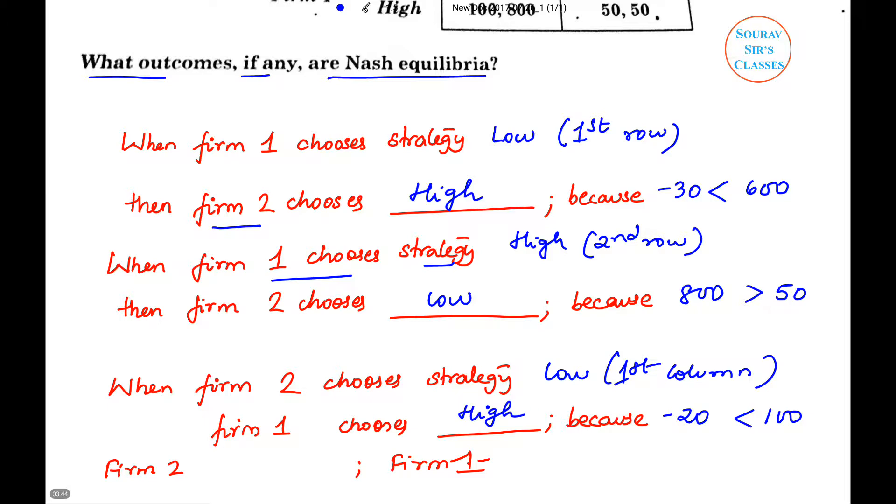And same, if Firm 2 chooses high, that means we are talking about the second column. Firm 1 will get payoff of 900 or 50. So because 900 is greater than 50, he will end up choosing the strategy low.